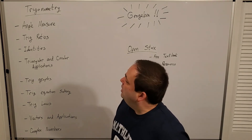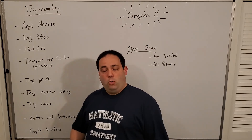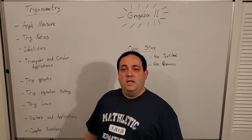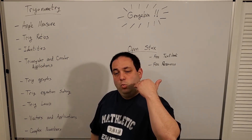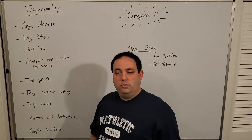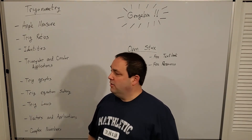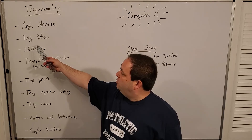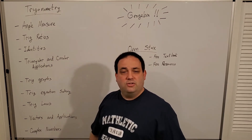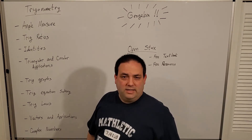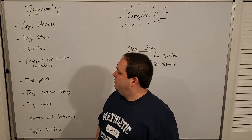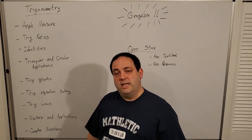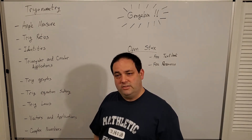So in this course, you of course start with talking about angle measures, and we use right triangles and Pythagorean theorem to expand that into trig ratios — the trigonometric ratios such as sine, cosine, and tangent, and so on. And then the identities that go along with those things and how they relate to each other.